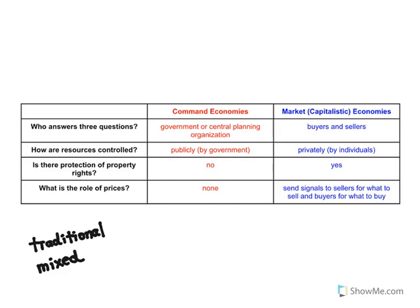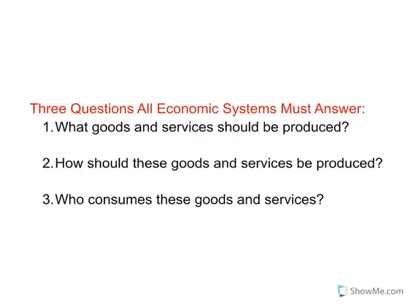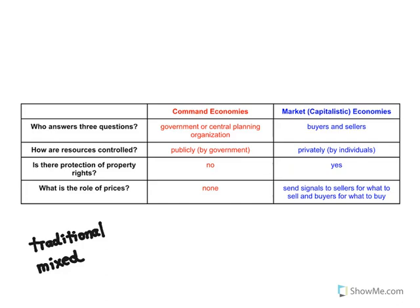Command economies, shown here in red, and market or capitalistic economies, shown in blue. In command economies, it's all about the government — the government decides who gets what, how it's going to be made, and what's going to be made. The resources to make the goods are controlled by the government, and that's really key, because if you control the resources, you get to dictate what gets paid, because nothing can be made without your approval.